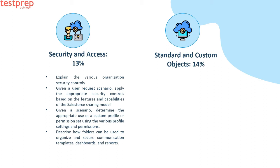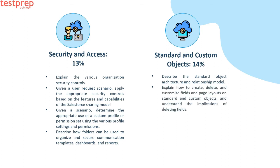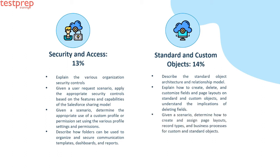Standard and Custom Objects, 14%: First, describe the standard object architecture and relationship model. Second, explain how to create, delete, and customize fields and page layouts on standard and custom objects, and understand the implications of deleting fields. Third, given a scenario, determine how to create and assign page layouts, record types, and business processes for custom and standard objects.